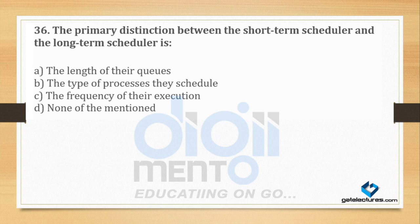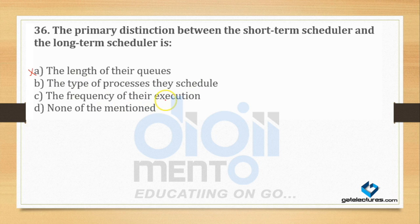Short term scheduler aur long term scheduler ke beech mein difference kya hai? Short term scheduler ke paas ek queue hai, aur long term scheduler ke paas bhi ek queue hai jisko bolte hain job queue. The length of their queues cannot be the primary distinction as they can be the same. The type of processes they schedule is also not the key difference. The frequency of their execution is the correct answer — how many times you can execute the scheduler.